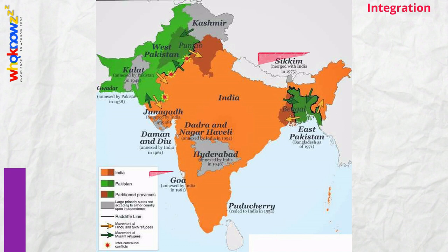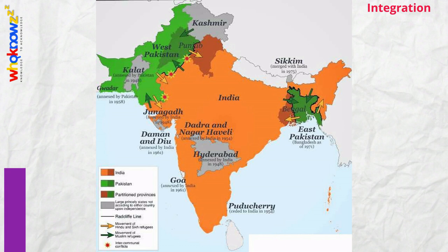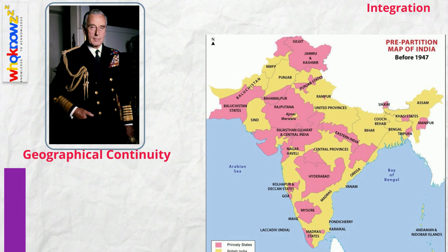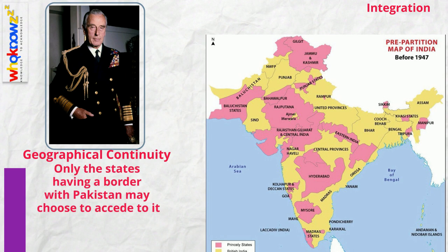Although there were some states like Sikkim and Goa which were integrated very late in Indian history, the story of Jammu and Kashmir's integration is closely linked to the story of integration of Junagad and Hyderabad, as all this was happening in the period from 1947 to 1949. Although, as per the India Independence Act, the states were in theory free to choose whether they wished to accede to India or Pakistan, Mountbatten advised that only states sharing a border with Pakistan should choose to accede to it.